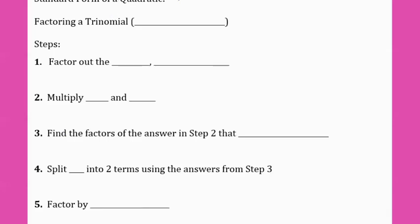The standard form of a quadratic is ax squared plus bx plus c. These letters are going to be important when we write the steps. Today we're going to be factoring a trinomial, and a trinomial just means that it has three terms.